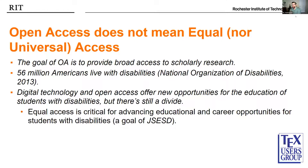The goal of open access is to provide broad access to scholarly research. But even when we succeed at removing price and permission barriers, others remain in place — namely, access for individuals with disabilities. Open access, which is unrestricted access to scholarly research, is not the same as equal or universal access. Universal access would be inclusive access for everybody, including individuals with disabilities.